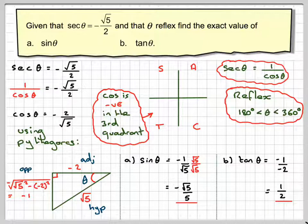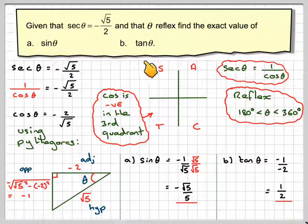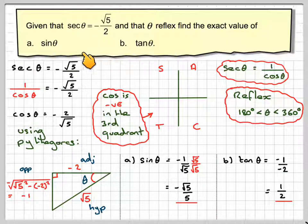So, this has been a video to show you how to find the value of sine θ and tan θ when you're given a value of sec θ, and the angle is reflex. I hope you've understood. This is an alternative method by drawing a right-angled triangle. I hope you've understood, and I thank you very much for watching.